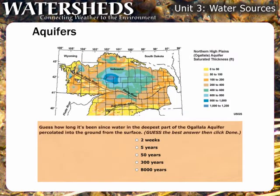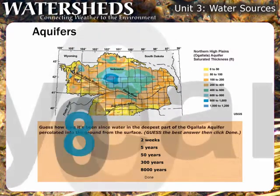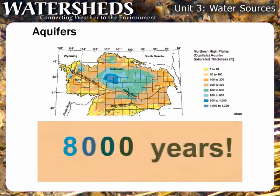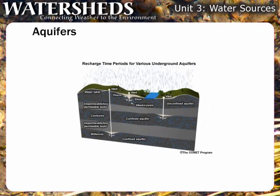How long has it been since water in the deepest part of the Ogallala Aquifer percolated into the ground from the surface? The correct answer is 8,000 years. Depending on soil composition, water movement into and within an aquifer can be very slow. Water drawn from deep within the Ogallala Aquifer is ancient indeed.